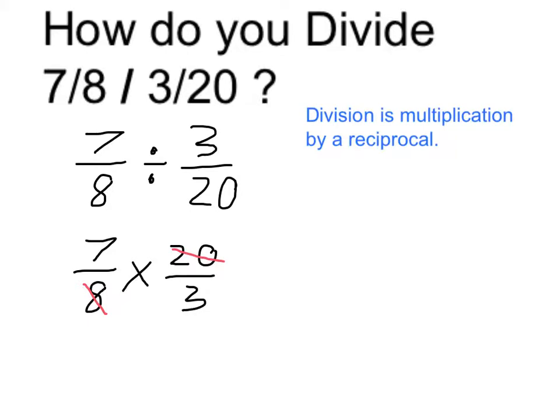Those are both divisible by 4. 4 goes into 8 2 times, and into 20 it goes 5 times. So I can simplify in that fashion.